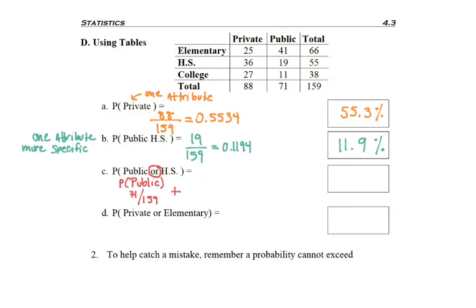So that means for this OR problem, I'd add up the 71 public school students with the 55 total high school students.